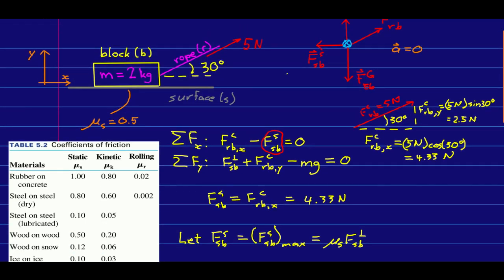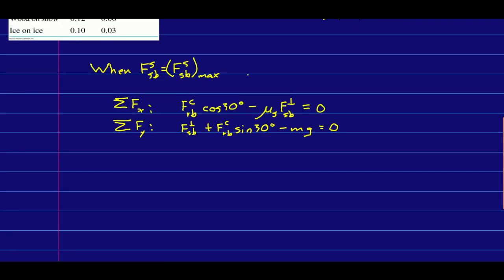Except remember, we're finding how hard we have to pull, so it's no longer 5 newtons. Here are the equations of motion rewritten that way. Note I've put in the components of the force due to the rope in terms of its magnitude, which is actually what we want. So that's an unknown.